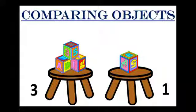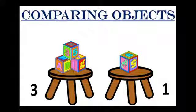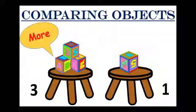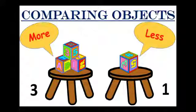So the number of blocks are not the same. One table has got more blocks and one table has got less blocks. Now can you tell me which table has got more numbers of blocks? Is it three or one? Which number is more? Three is more than one. So three is more, that means one is less. The left hand side table has more blocks and the right hand side table has less blocks.